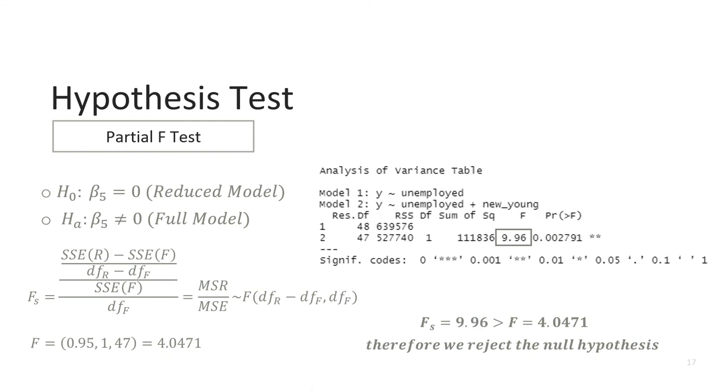We can perform the same hypothesis test for young age. Our critical value remains the same at 4.0471. This time our reduced model excludes young age, while our full model does not. The F statistic is shown as 9.96, and because this is greater than our critical F value, we can reject the null hypothesis and conclude that young age is a significant predictor in our model.